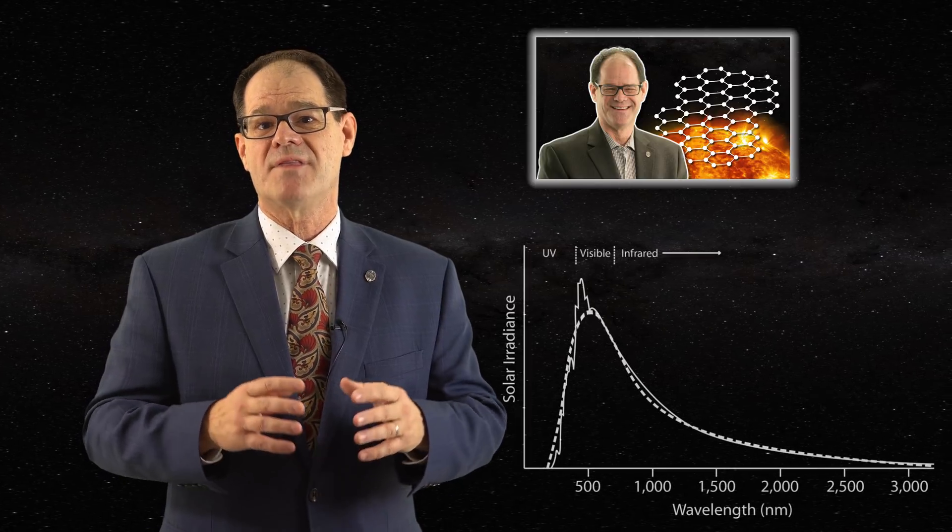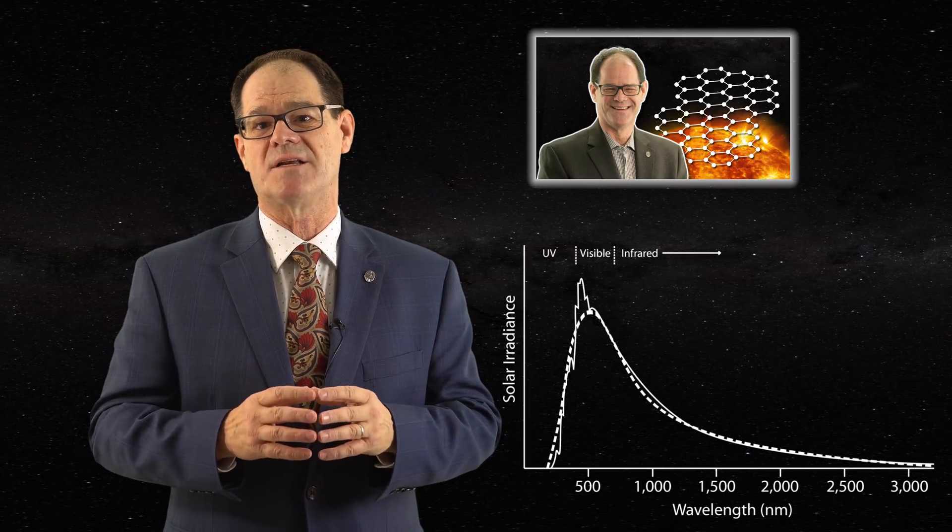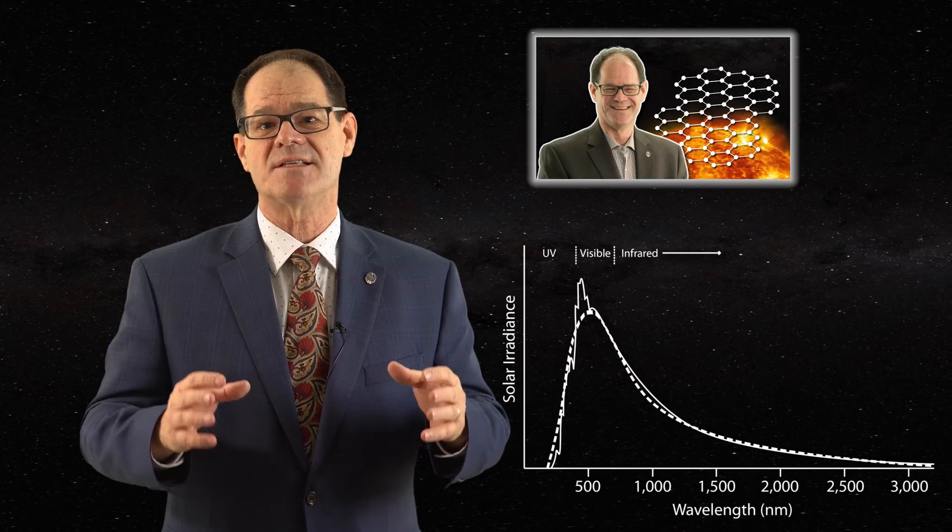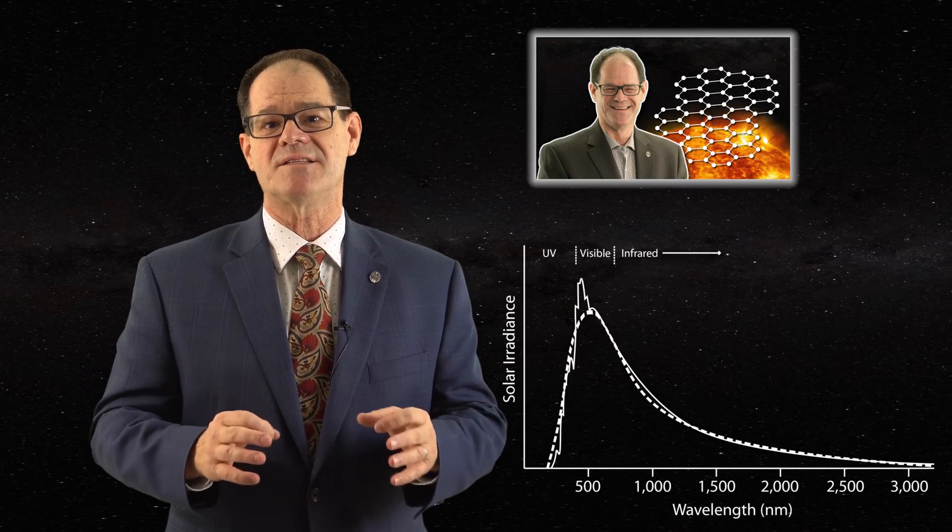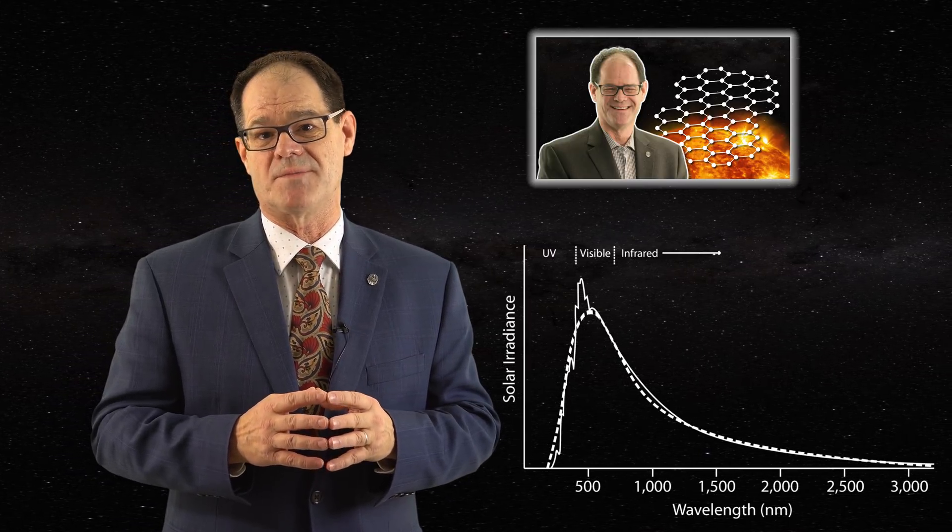As a result, if one insists that the photosphere is comprised of condensed matter in order to properly account for the solar spectrum, then the Sun must have a relatively uniform density throughout. The center of the Sun simply cannot achieve densities of 150 grams per centimeter cubed.